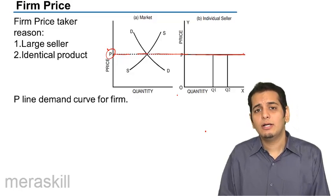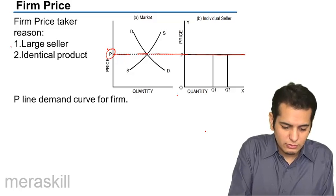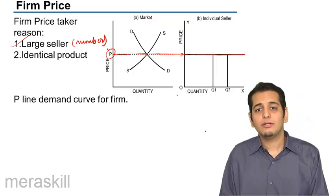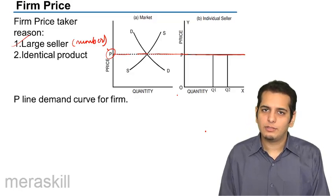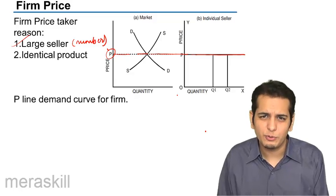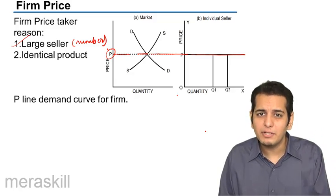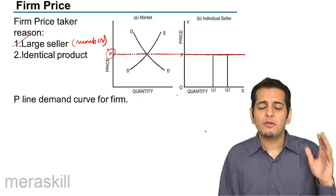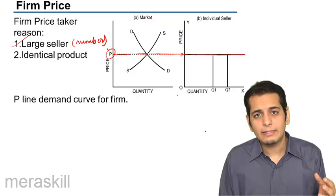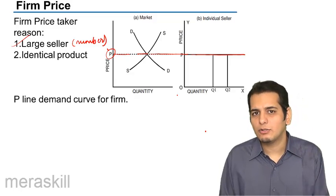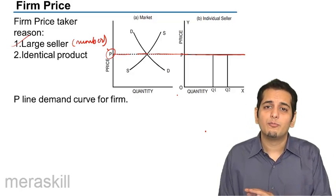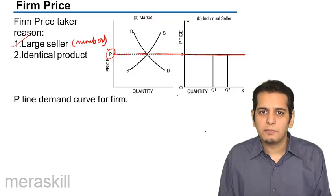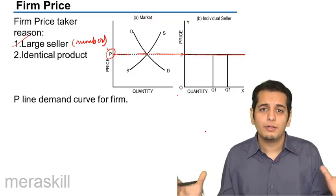Why does the seller have to accept whatever price the market sets? It's because there are a large number of sellers — innumerable sellers in the market. So each seller becomes a very small, tiny, minute part of the whole market. When you are a very tiny part, you cannot impact the whole market. It's like a tree is a very tiny, minute part of the whole universe. So even if a tree is cut down, it won't affect the universe — it might affect you in whose garden that tree was planted, but it won't affect the whole universe.